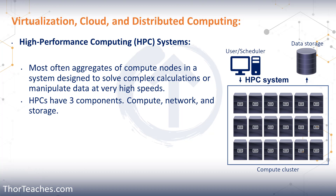If we have a bottleneck on any of those, it's going to be a lot less efficient than we need it to be. If we don't have enough network, that's a bottleneck — it doesn't matter that we have all the compute and storage we need because we can't transmit the data fast enough. The same with storage or compute. All three need to be designed and aligned with what we need for resources whenever the HPC performs its tasks.